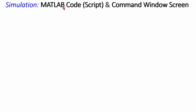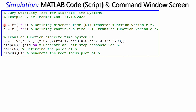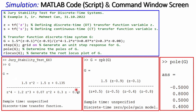Now we verify this in MATLAB. The script uses z as the discrete time parameter and s for the continuous time parameter. We define the transfer function for this example. The commands step(G) generates the unit step response, pole(G) gives the poles, and rlocus(G) gives the root locus plot showing pole locations graphically. Running the script in the MATLAB command window produces the results.